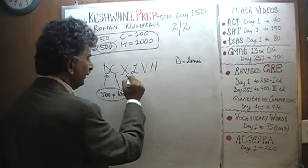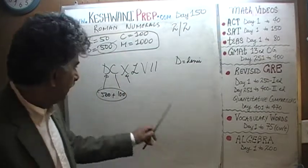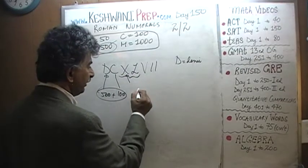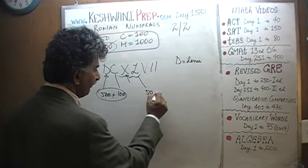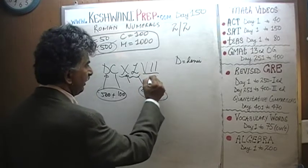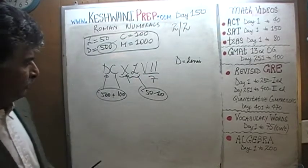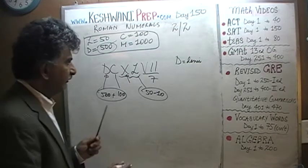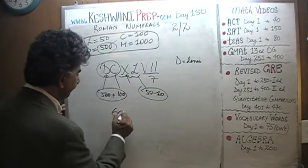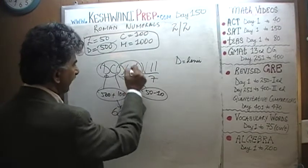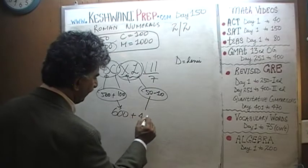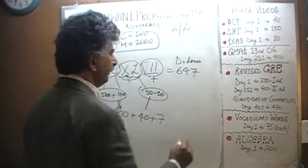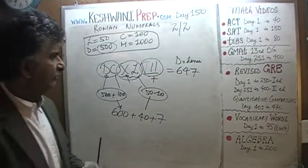Here we see X, a lower number to the left of a higher number. L is 50. When a lower number appears to the left of a higher number, we subtract it. So XL is 50 minus 10, which is 40. Then we have a 7. So 500 plus 100 is 600, and this part right here is 40 plus 7. So this number is 647.